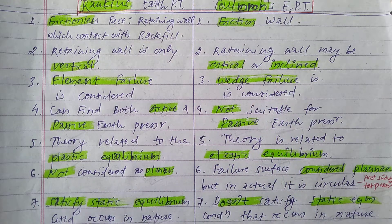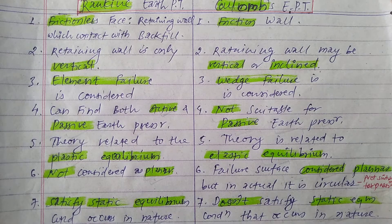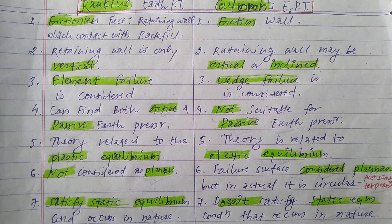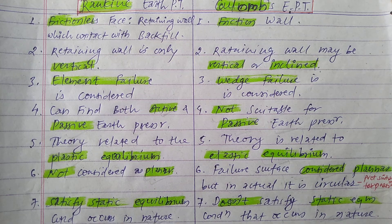So these are the main basic differences between Rankine's earth pressure theory and Coulomb's earth pressure theory. I hope you understood well. If you have any queries, please comment down below. I have uploaded many videos related to civil engineering — structural design, steel design, sanitary engineering, and all related subjects. The video links are in the description box. Please visit the channel, subscribe, and like the video. Thank you very much, have a good day.